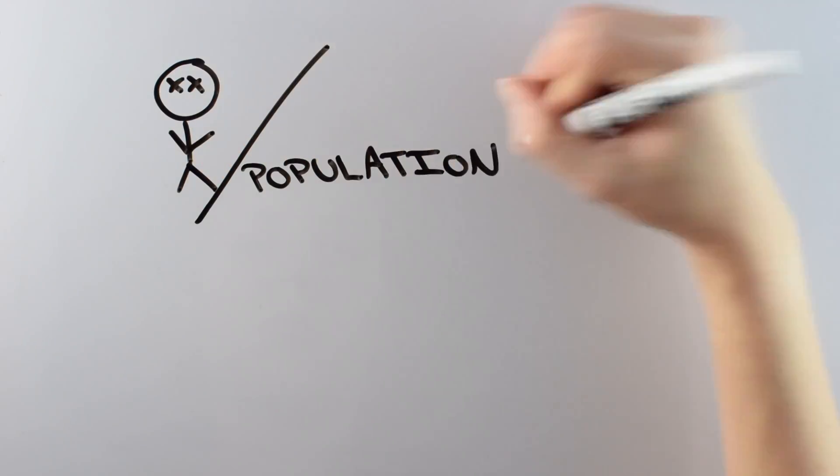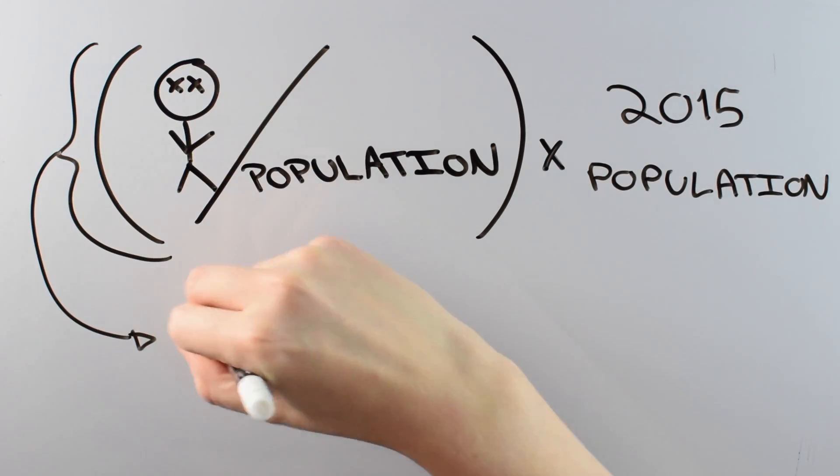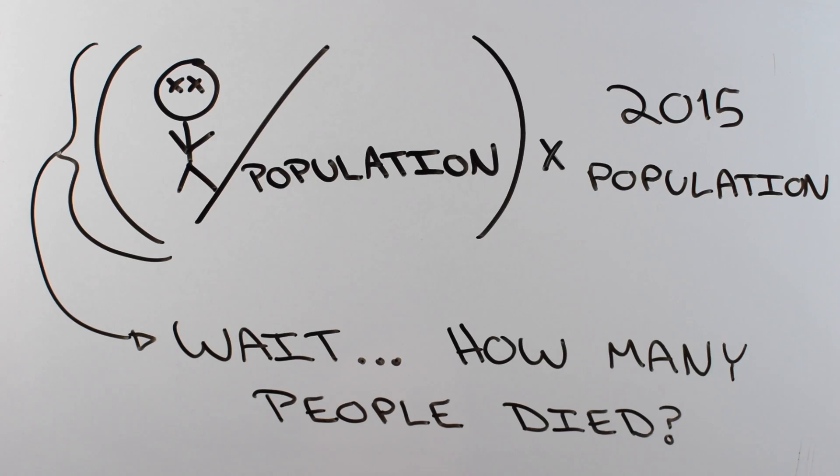So let's take some historical data on death tolls and put it all on the same footing and adjust it for the death toll that it would be in 2015. And ask the question, how many people died?